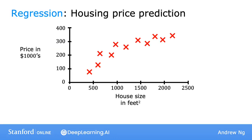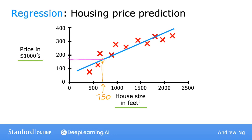Let's dive more deeply into one specific example. Say you want to predict housing prices based on the size of the house. You've collected some data and plotted it. Here on the horizontal axis is the size of the house in square feet — I live in the United States where we still use square feet, I know most of the world uses square meters. And here on the vertical axis is the price of the house in thousands of dollars. If a friend wants to know the price for their 750 square foot house, one thing a learning algorithm might do is fit a straight line to the data, and reading off that line, it looks like your friend's house could be sold for maybe about $150,000.